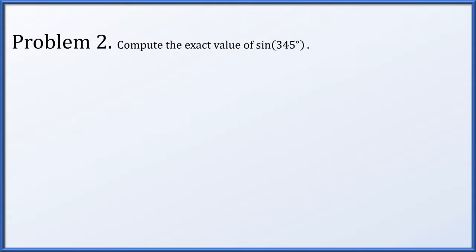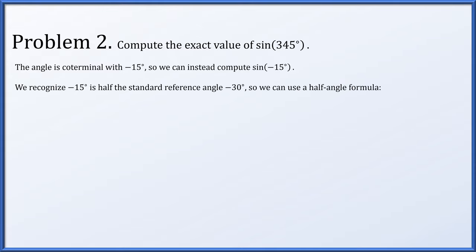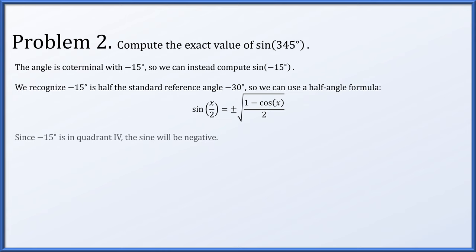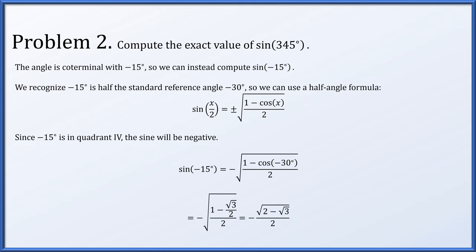In problem 2, let's compute the exact value of the sine of 345 degrees. This angle is coterminal with negative 15 degrees, so we'll compute the sine of negative 15 degrees. Negative 15 degrees is half of the reference angle negative 30 degrees, so we'll use the half-angle formula: sine of x/2 is plus or minus the square root of (1 minus cosine of x) all over 2. Negative 15 degrees is in quadrant 4, so sine is negative, so we take the negative square root. This gives minus the square root of (1 minus cosine of negative 30 degrees) over 2. The cosine of negative 30 degrees is √3/2, and this simplifies to negative square root of (2 minus √3) all over 2.